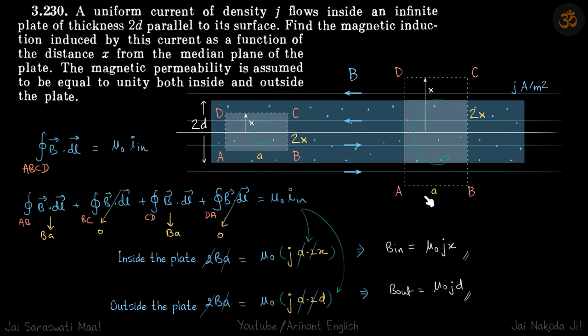And for this loop, I enclosed is only this part shaded part, which is A into this height, which is 2D. So J into A into 2D.